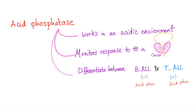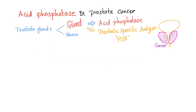T-ALL is acid phosphatase positive, while B-ALL is acid phosphatase negative. Let's turn our attention to acid phosphatase and the prostate gland.